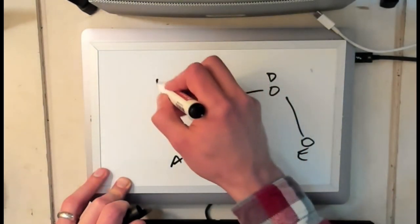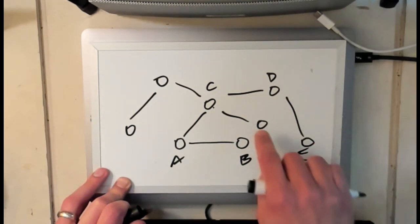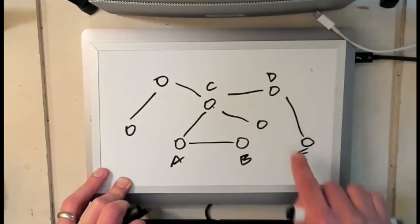And if I have branches off this that are themselves linear, like I have a few more nodes like this, this graph still does not have any cycles.